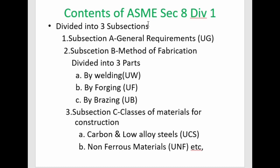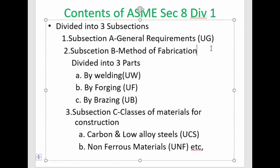ASME Section 8 Division 1 is divided into three subsections. The first subsection is Subsection A, which covers general requirements, denoted as UG. This means the general requirements are applicable to all other subsections, including Subsection B and Subsection C.